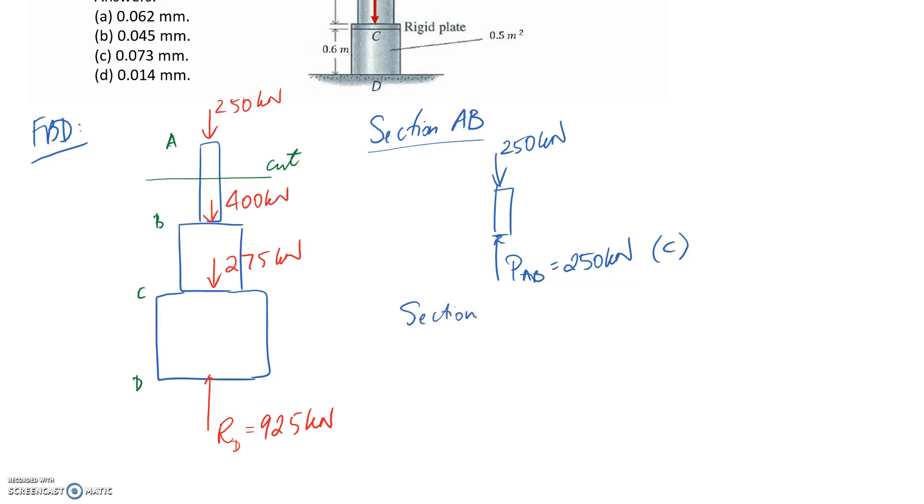Now section BC. Remember you can only take one cut at a time, so we're cutting through between B and C. You can redraw the top or bottom side. Carrying across we've got the 250 and the 400. At the cut point we need to replace it with the internal load PBC. We need to make sure forces are balanced, so negative 250 minus 400 plus PBC has to be zero, therefore it's going to be 650 kilonewtons.